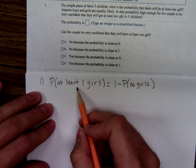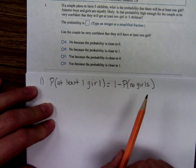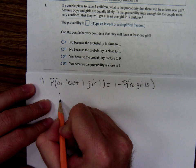At least one girl means you have either one, two, three, four, or five girls. The only way that couldn't happen would be if you had no girls. So, let's calculate the probability of having no girls.